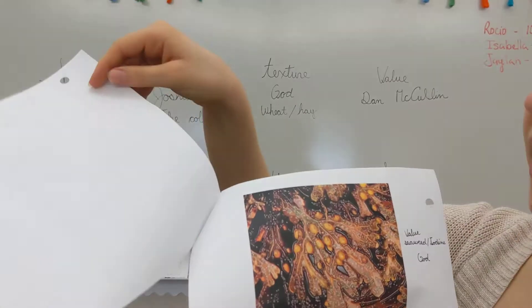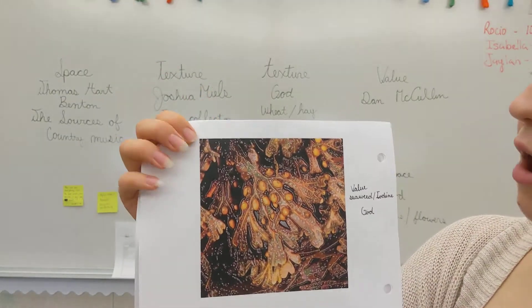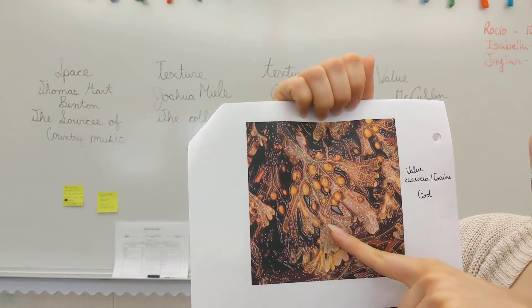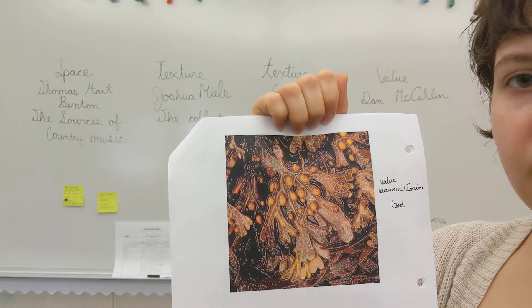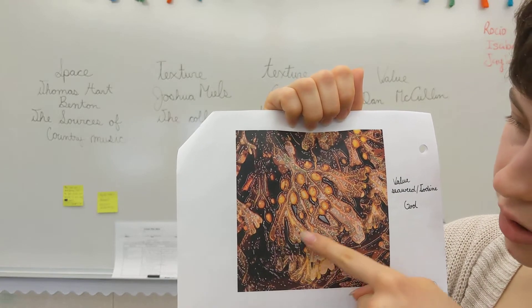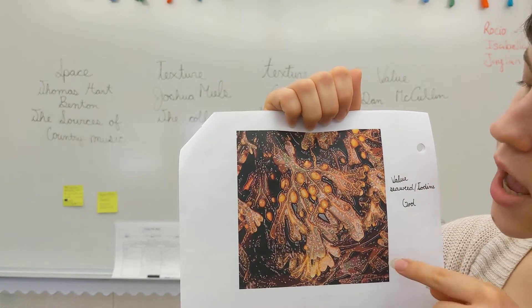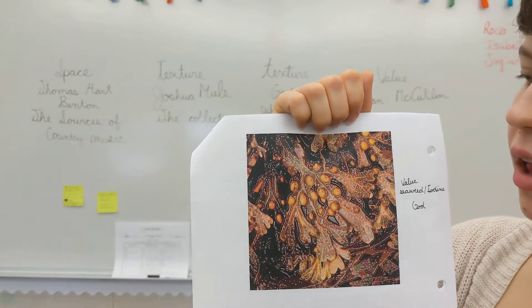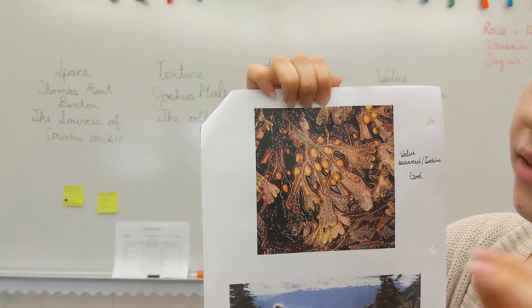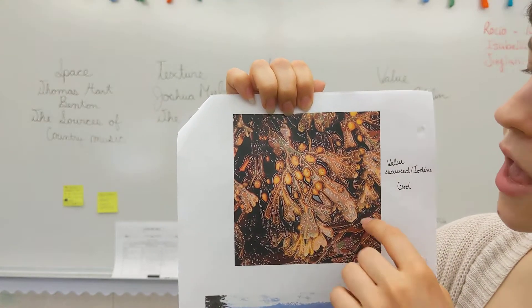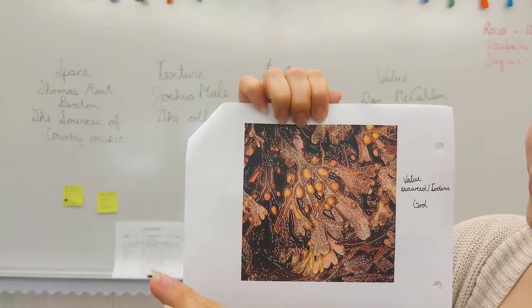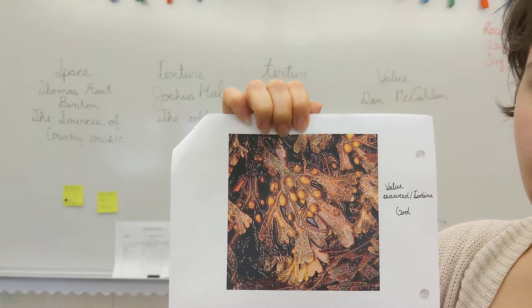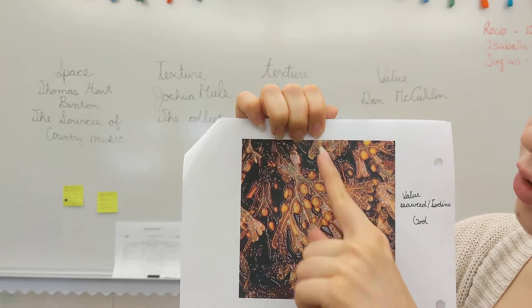Now flip the next page, and we're going to be dealing with value. Value is different lightings in color — very dark color and very light colors. It's just differentiating through color shades, lighter and darker shades. So this is seaweed — it's like a microscopic vision of seaweed, also called iodine, which is found in seaweed. And God created this.